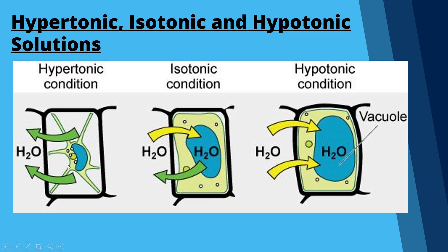These three diagrams represent what happens to a plant cell in different solutions. In a hypertonic solution the cell becomes plasmolysed — the membrane pulls away from the cell wall as H₂O leaves the cytoplasm. In an isotonic solution there's a balance: water moves in and out via osmosis at an equal rate, so there's no net movement — we call that equilibrium.